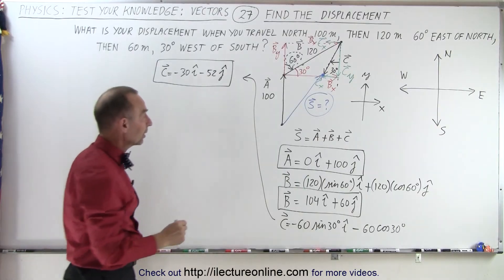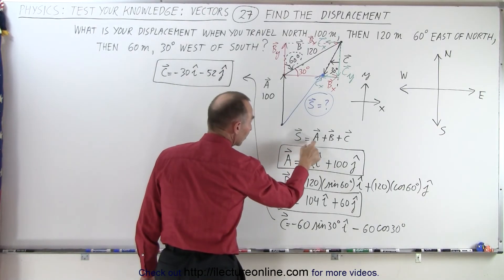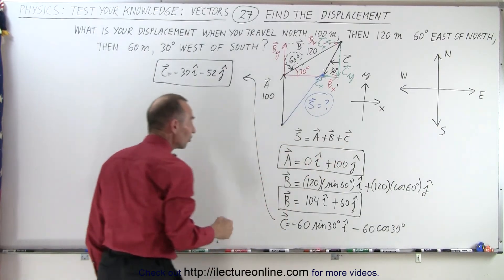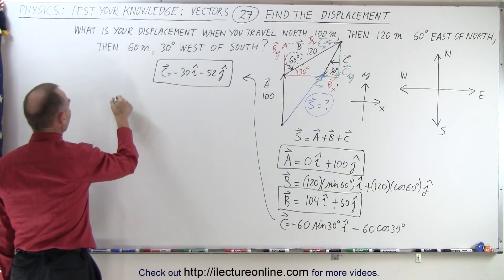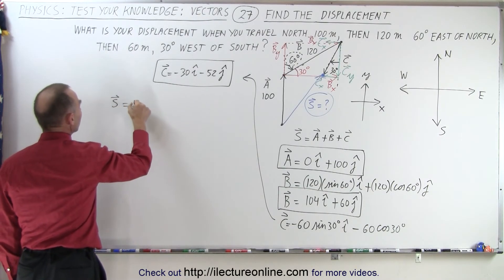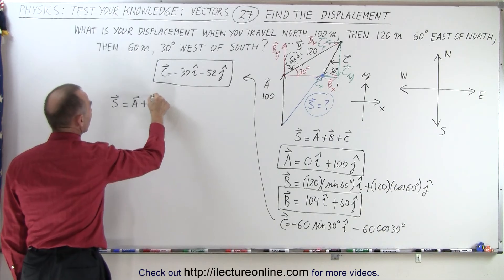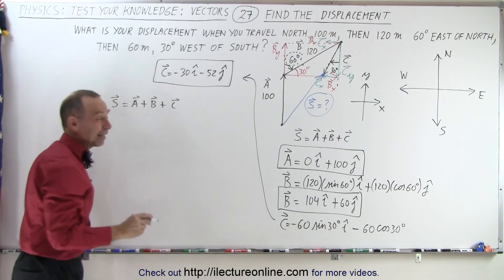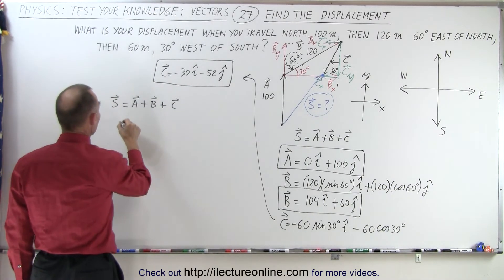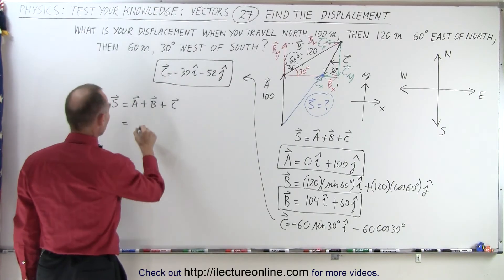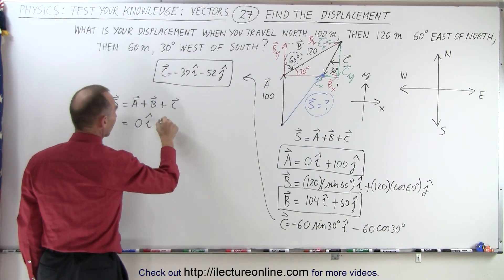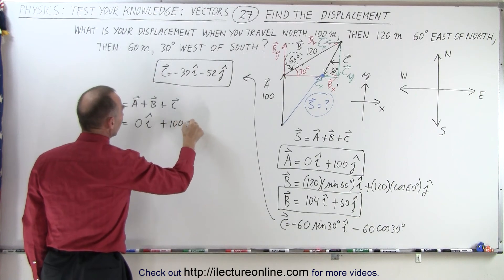or the sum of the three vectors. So we have S is equal to A plus B plus C. It's not a bad idea to write it vertically to make it easier to see how to add them up. The A vector is going to be 0I plus 100J.